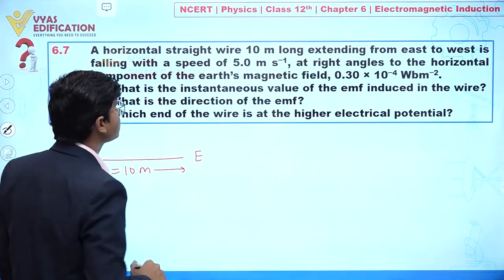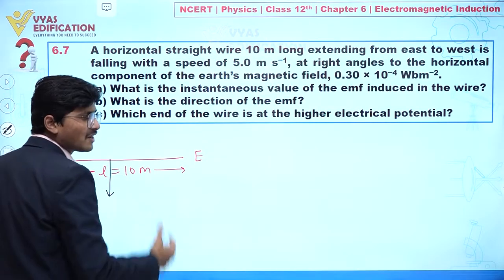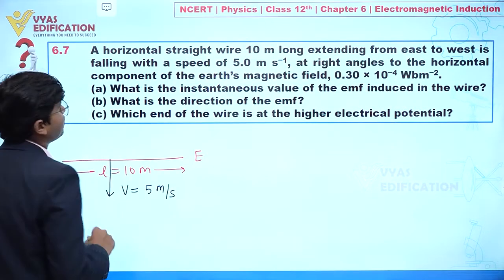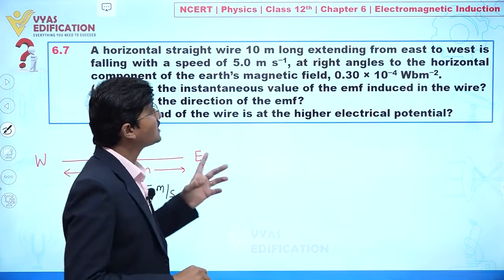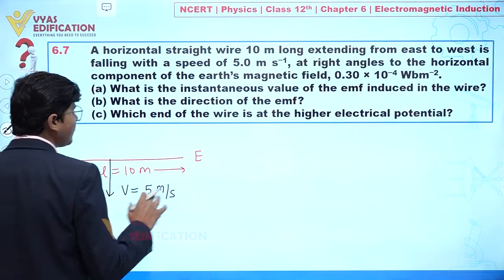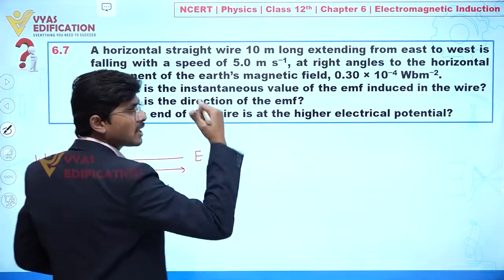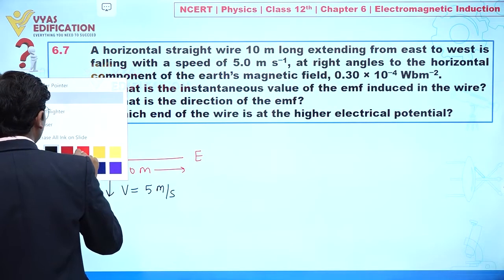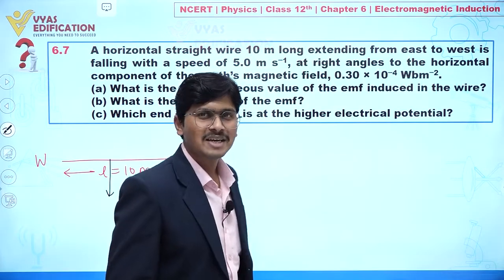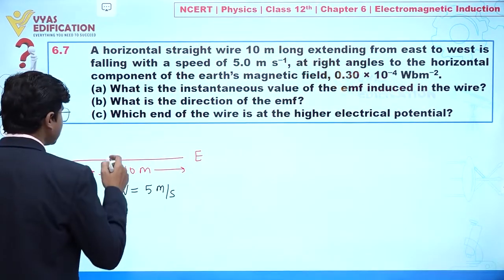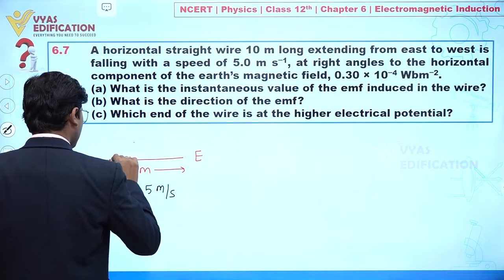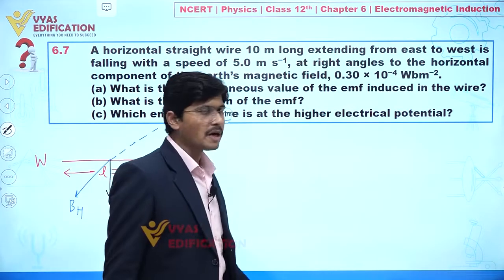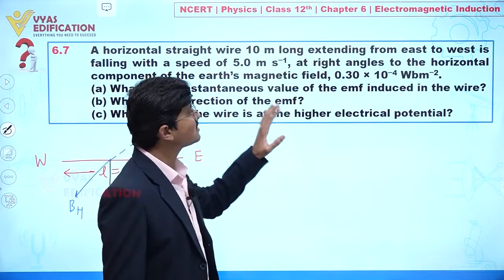It is falling with a speed of 5 meters per second, so it falls in the downward direction. The value of v is 5 meters per second at right angles to the horizontal component of Earth's magnetic field. In this direction we have east, this is west, this is north, and this is south. The horizontal component of the magnetic field moves from north to south, as indicated here. So in this direction we have the horizontal magnetic field.